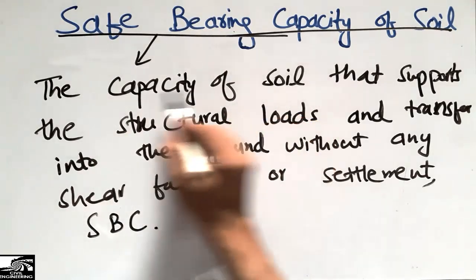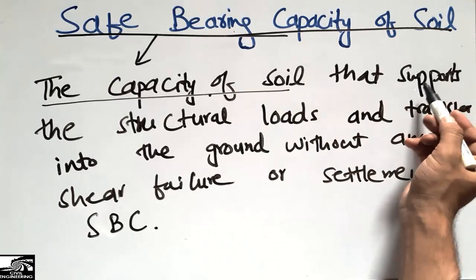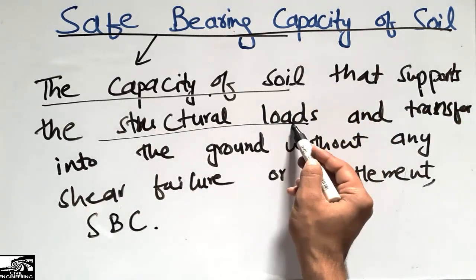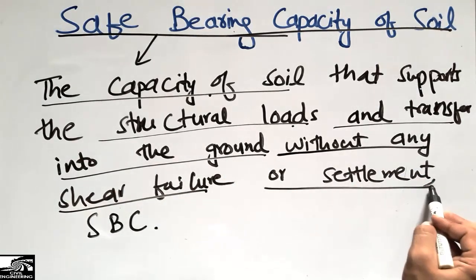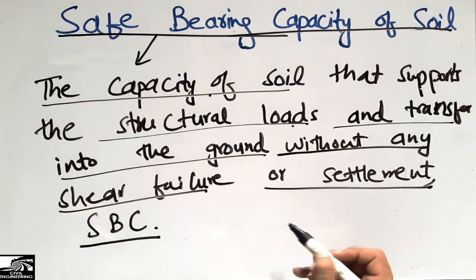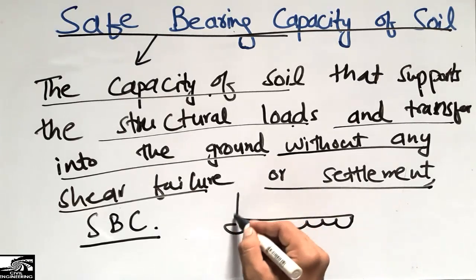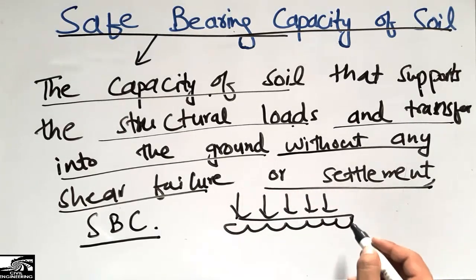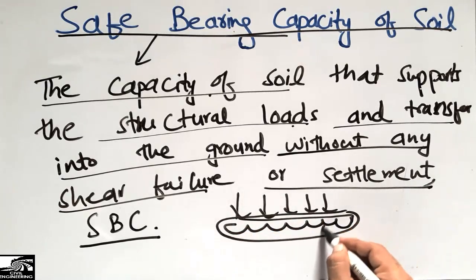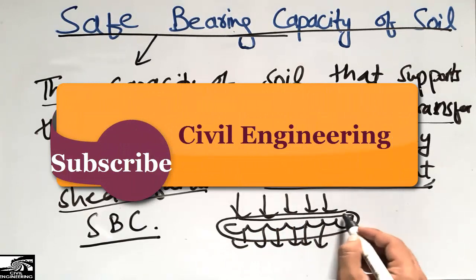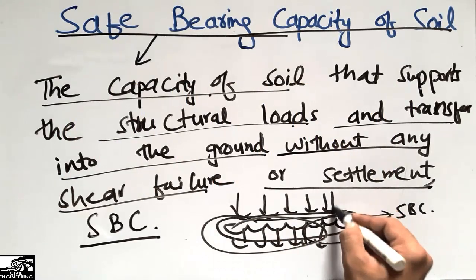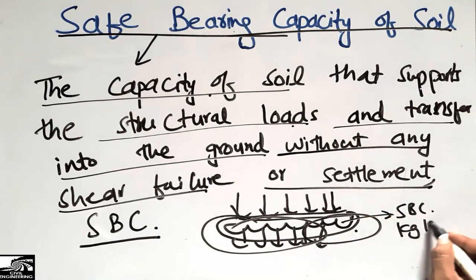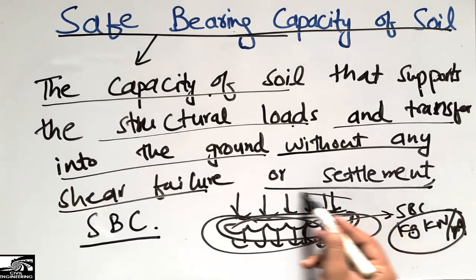The strength of the soil that supports the structural load coming on the soil and transfers this load into the ground without any shear failure or settlement of the soil — we call this the safe bearing capacity of the soil. The load coming in kilogram or kilonewton is divided by the area, so it is the ratio of load per unit area.